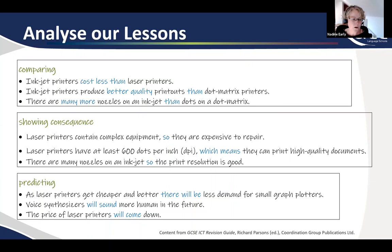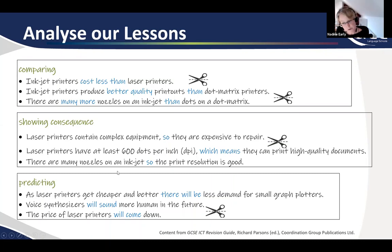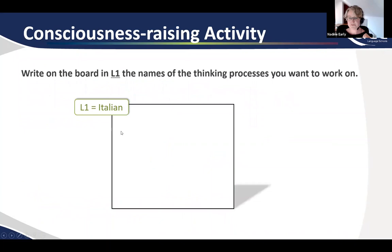Here are a list of possible example sentences that our two imaginary teachers might come up with to demonstrate some of the thinking processes required for the topic of output devices: four sentences for defining, three for classifying, comparing, showing consequence and predicting. The language patterns highlighted in blue are what we call the functional language — the language patterns that tell the reader or listener which function or thinking process is being used. I'm going to show you three activities which can be used to help learners notice and identify these thinking processes and the functional language used with them. For each of the three activities, the sentences need to be cut up so that we have each example sentence on a single slip of paper.